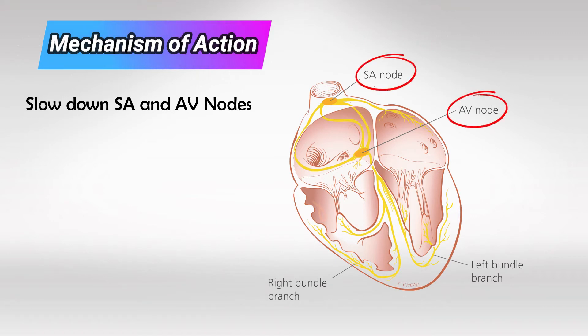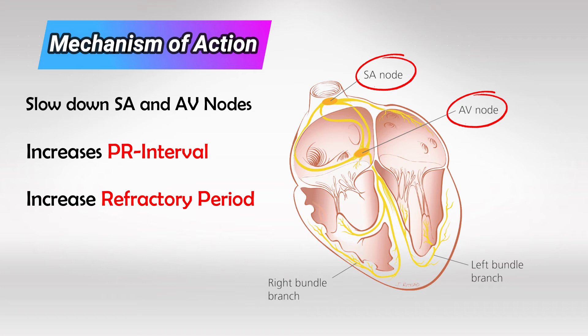The SA node will fire less frequently and the AV node will slow down. This increases the refractory period and the PR interval.